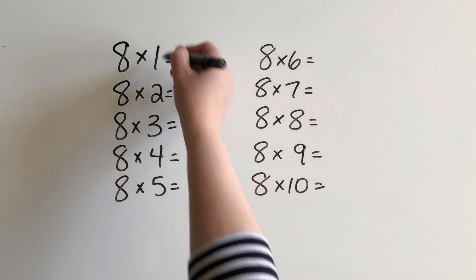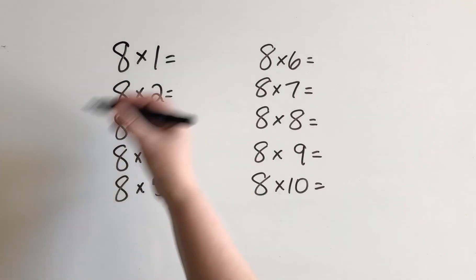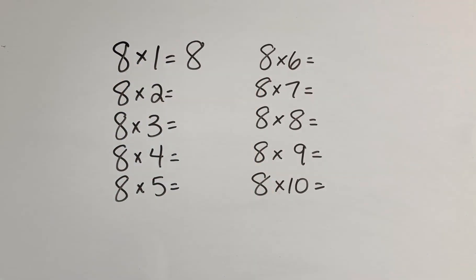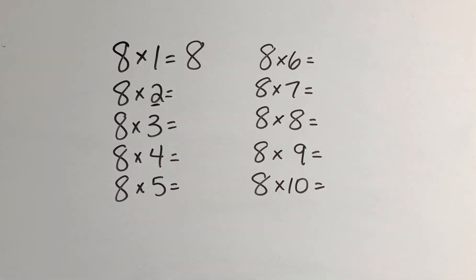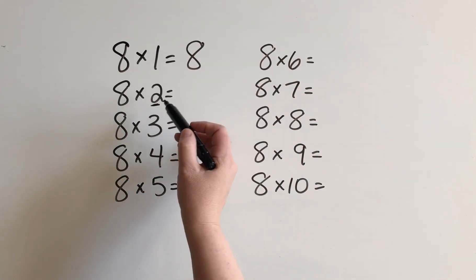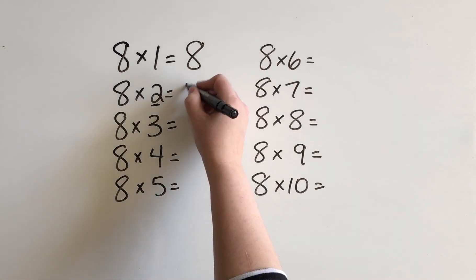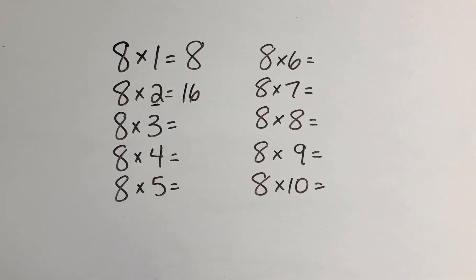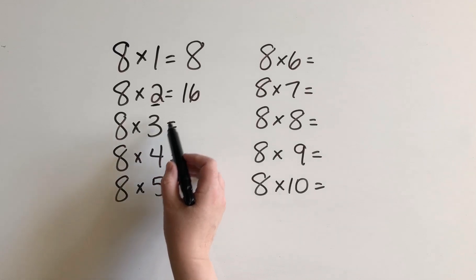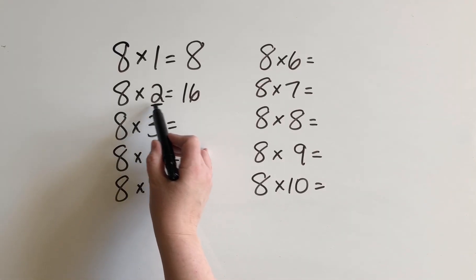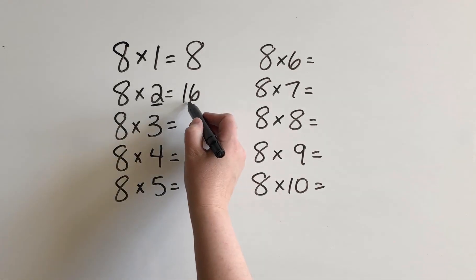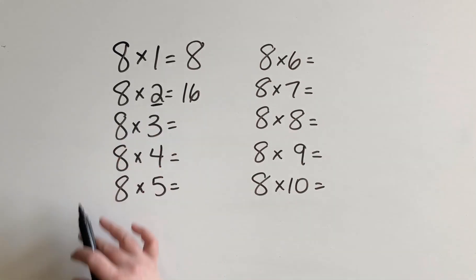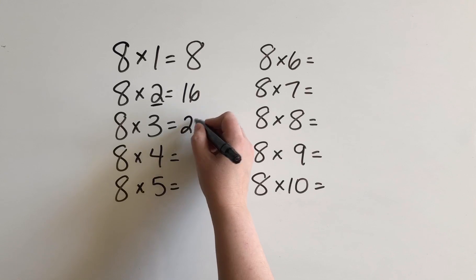So 8 times 1, I know my 1's facts because I know that anything times 1 is itself. So that's 8. For 8 times 2, I'm going to use the doubles because I see that I'm multiplying by 2. So I know that I can think about the double of 8, and that's 16. When I multiply by 3, I know that I'm just going to add one more group of 8 to my 2 groups of 8 from up there. So I had 16. Now I'm just going to add one more group of 8, and that gives me 24.